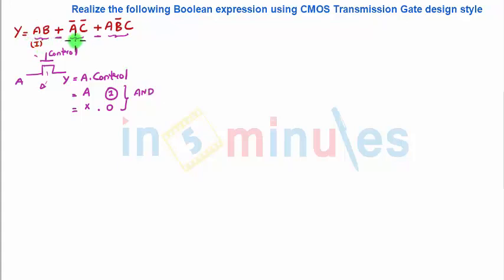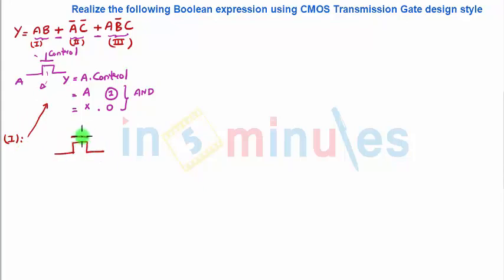Let's call these Term 1, Term 2, and Term 3. Term 1 is A·B and can be easily implemented: draw an NMOS where B is the control and A is the input, giving Y = A·B. If B = 1, Y = A; if B = 0, Y = 0 — this is an AND gate, as seen from the truth table.